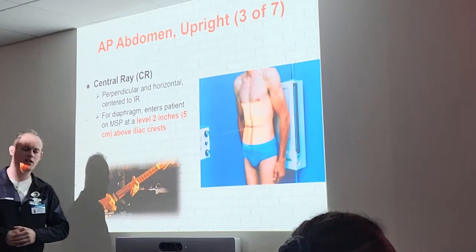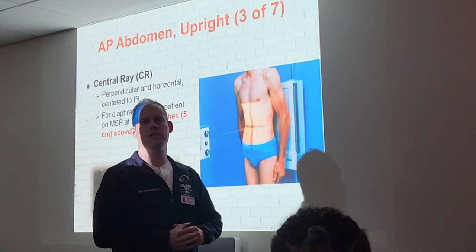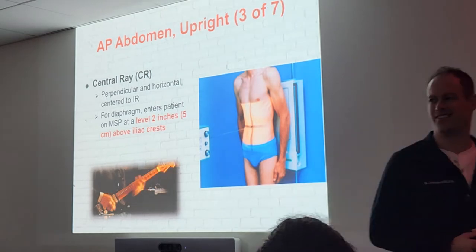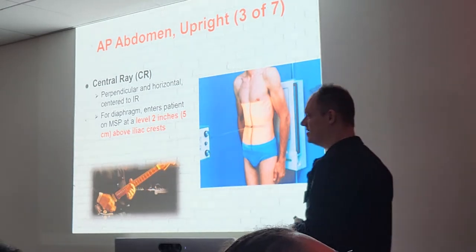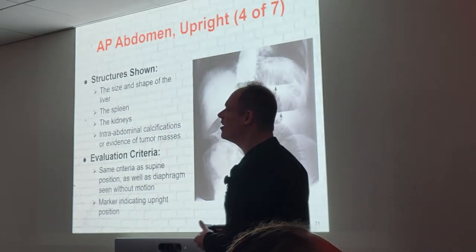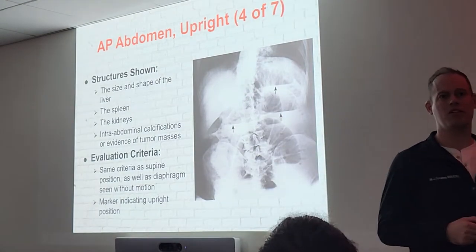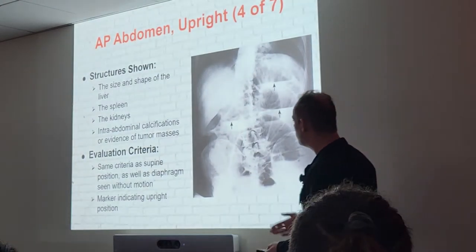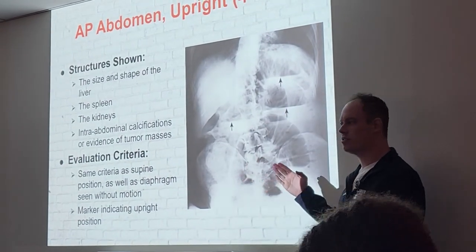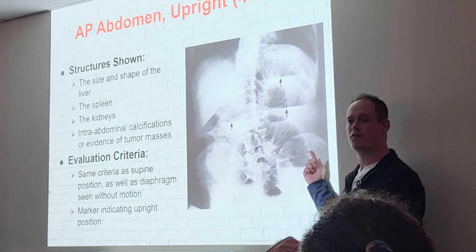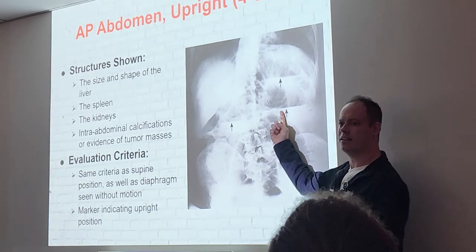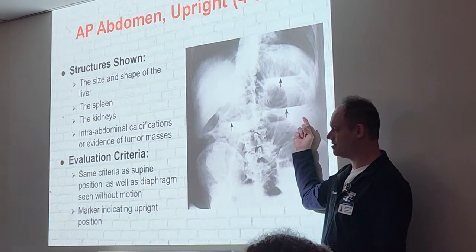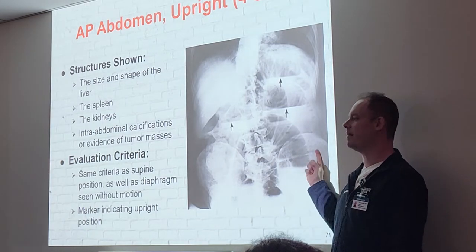Once again, two inches above your crests — why? To include the diaphragm. It's a perpendicular central ray, no angulation. We're not doing any angles this chapter. On our uprights, we're still going to see the size and shape of the liver, spleen, and kidneys, and those calcifications. But one key difference is we can see air levels and fluid levels. When looking at air levels, to determine if you're seeing an upright versus KUB, you look for straight horizontal lines — gas with a straight horizontal line cutting it off tells you the patient is erect.